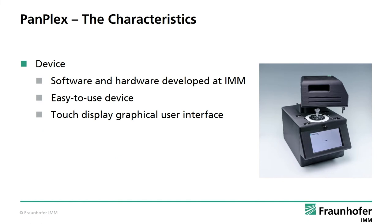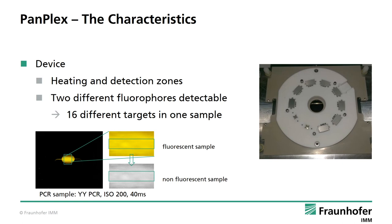Regarding the device: software and hardware were developed at Fraunhofer IMM. The aim was to develop a system that is easy to handle and performs the PCR reaction automatically without any additional manual intervention. The system is controlled by an internal touch display on which results are also presented. The PCR requires different temperature zones — each reaction chamber is placed on a heater for a specific time, the cartridge is turned, and the chamber is placed on the next heating zone. Thus, a fast PCR reaction can be performed because heating and cooling of the heaters is not necessary.